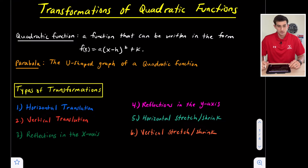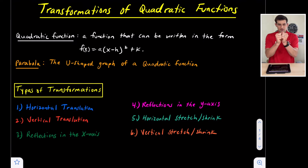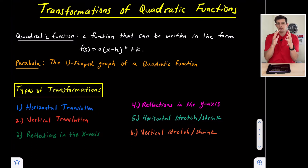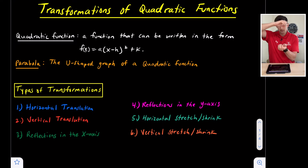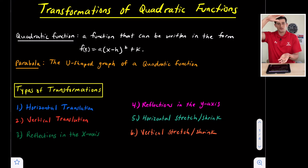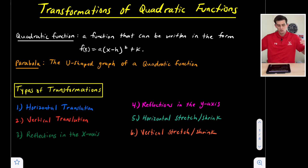The fifth transformation is a horizontal stretch or shrink. A horizontal stretch is like pulling the graph out, so it opens wider. A horizontal shrink is like pushing in from the sides, so it gets more narrow. The sixth is a vertical stretch and shrink — a vertical stretch is like grabbing the parabola and pulling it up, making it more narrow, while a vertical shrink compresses it so the graph opens wider.